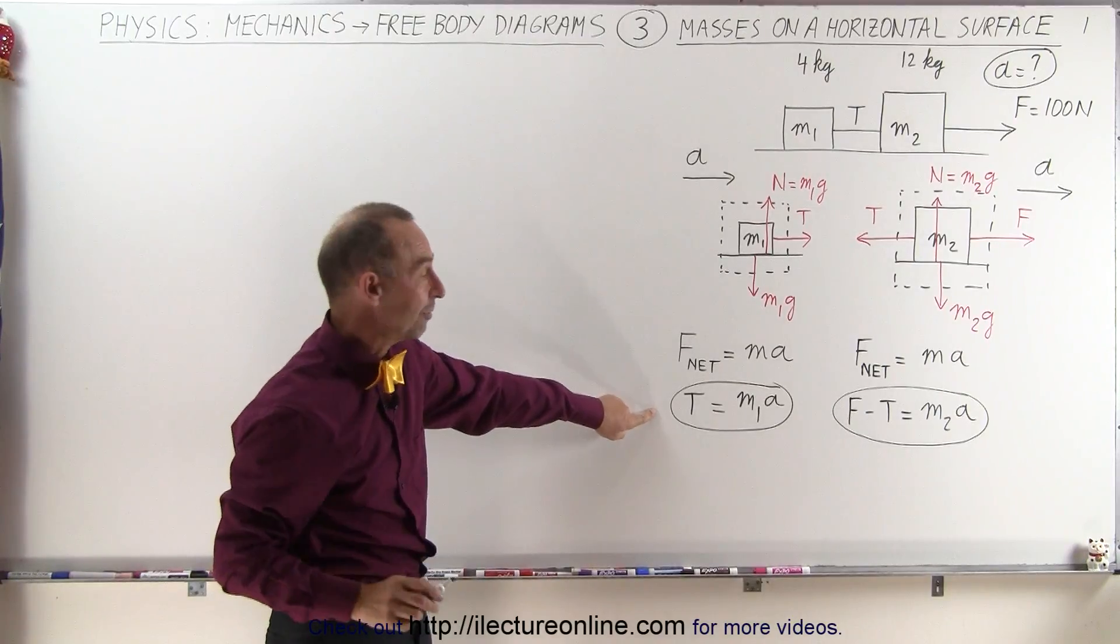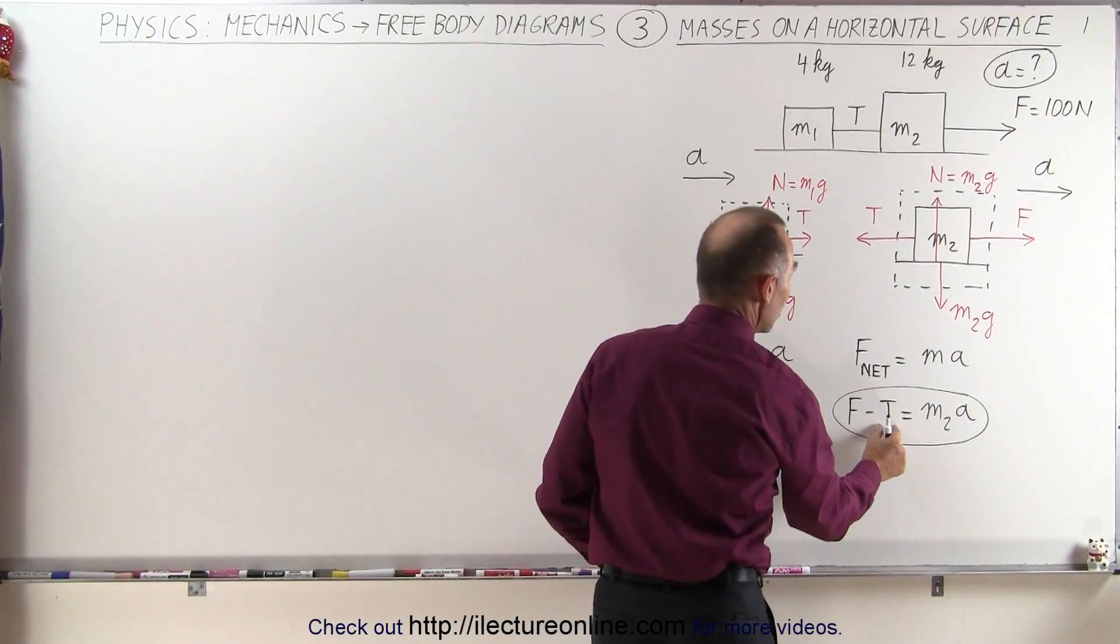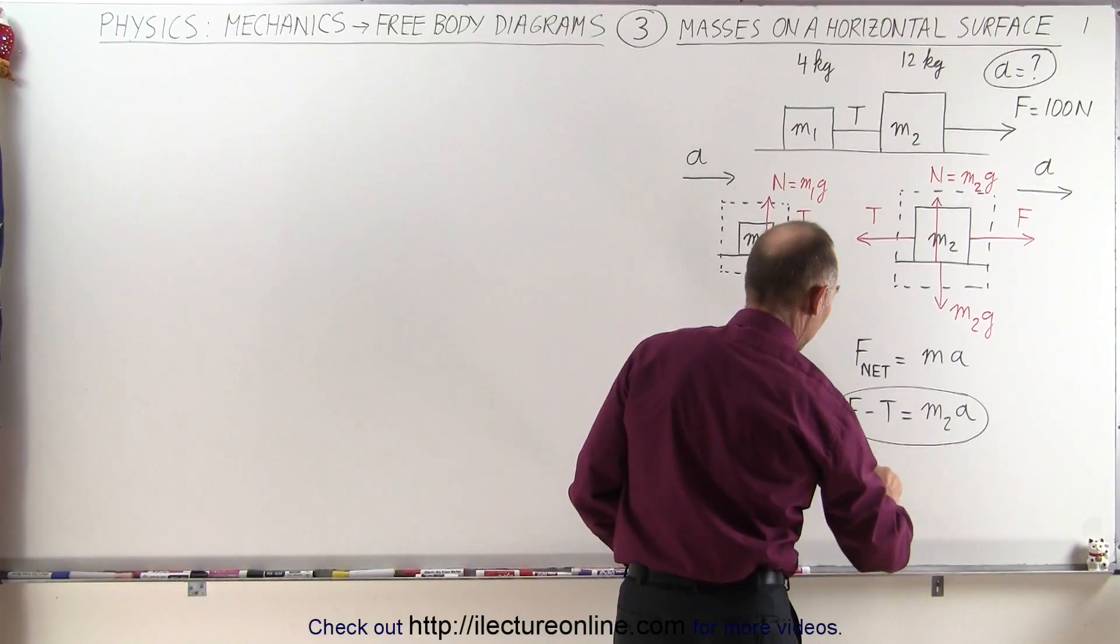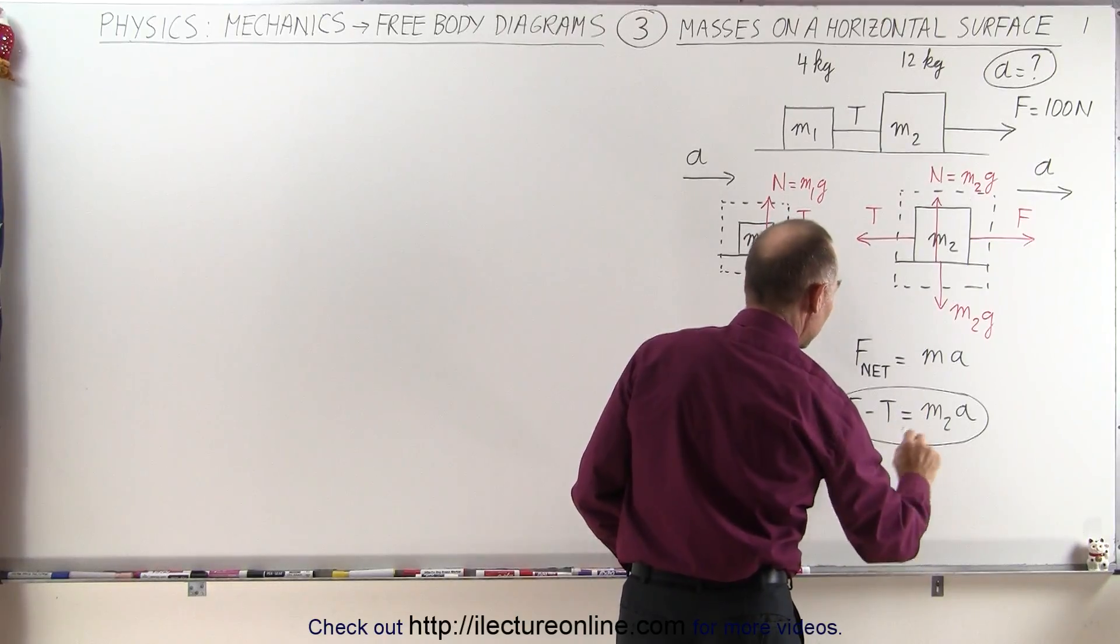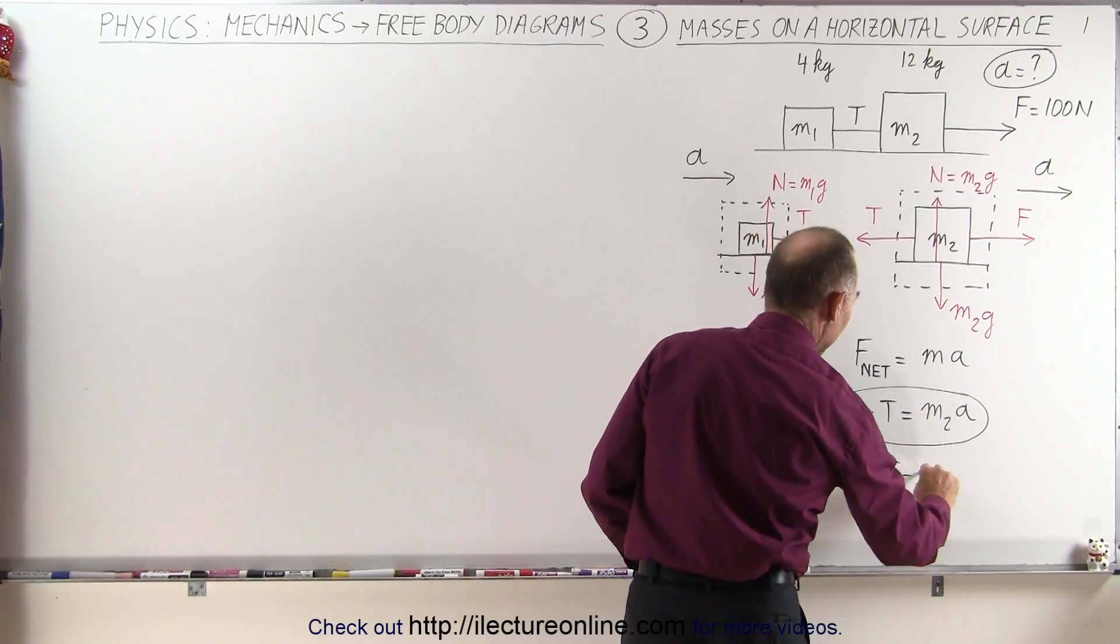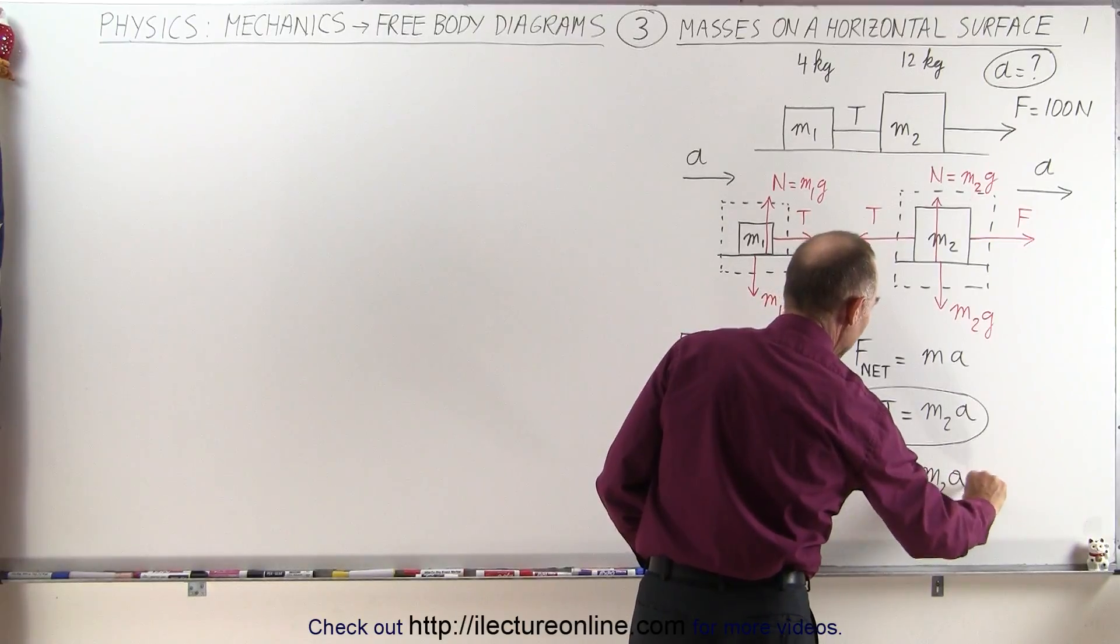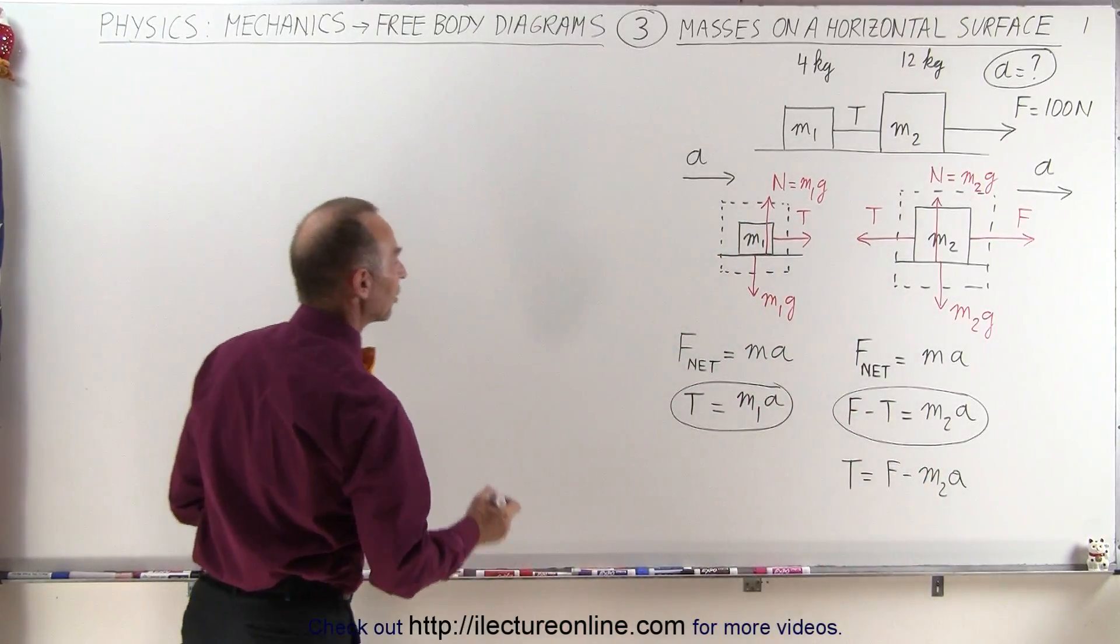Now the left equation is already solved for T. On the right equation we move the T to the right and this to the left, and then we flip the equation around, so T is equal to F minus m2a, and then we can set those two equations equal to each other.